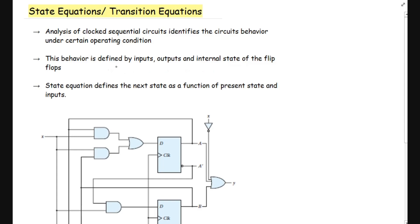To mathematically represent the behavior of a sequential logic circuit, we need to define the state equations. A state equation is the algebraic expression of the internal state of the sequential logic circuit. By definition, a state equation defines the next state as a function of the present state and inputs. It is important to understand that it is a function of both present state and inputs.